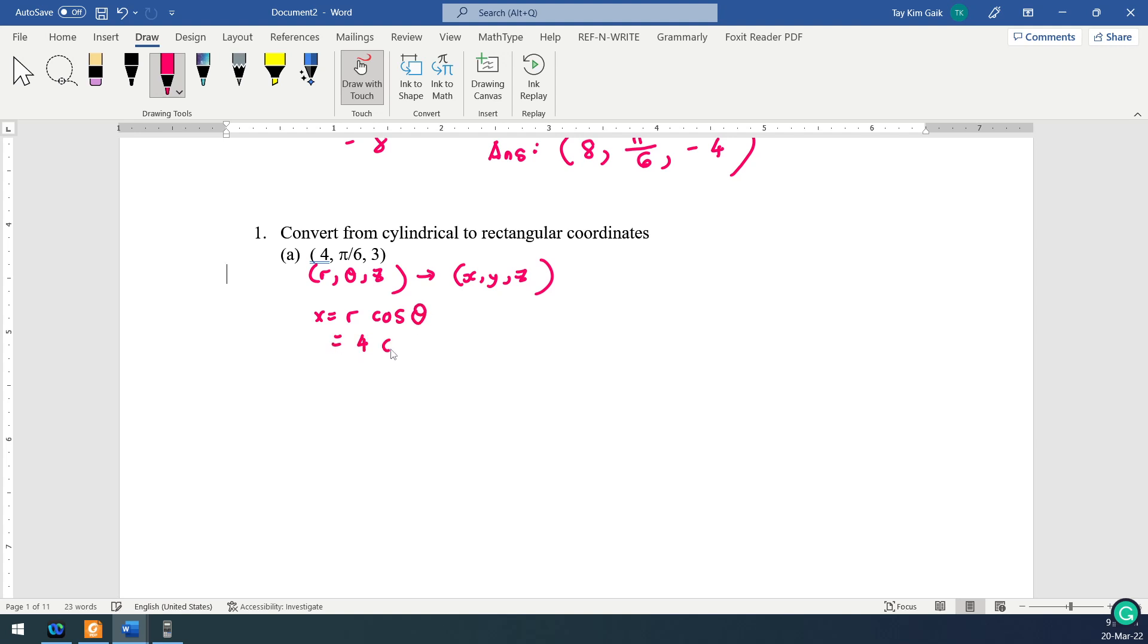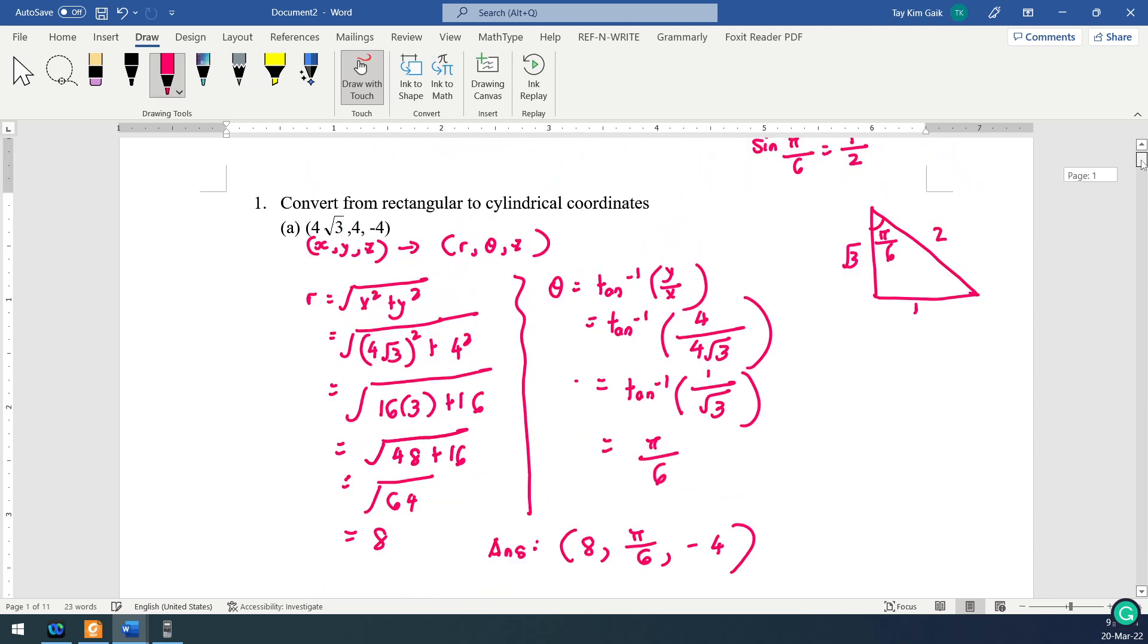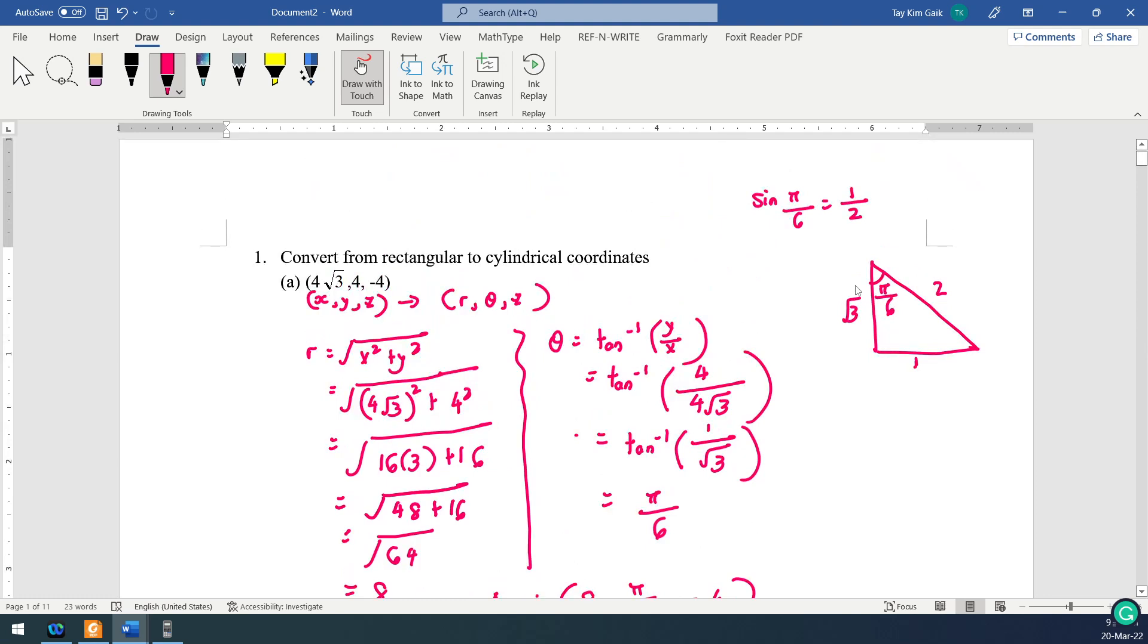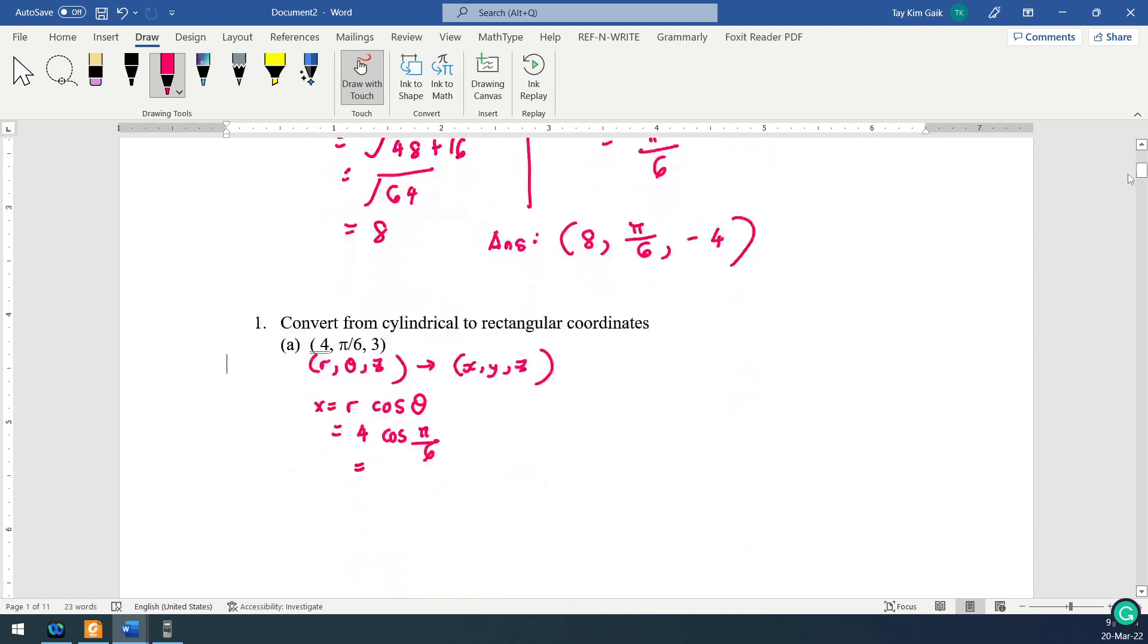So as you know, x is actually r cos theta. R is 4, so cos pi over 6. That's not pi over 6 here. Cos, here 3 divided by 2. So you have 2√3.